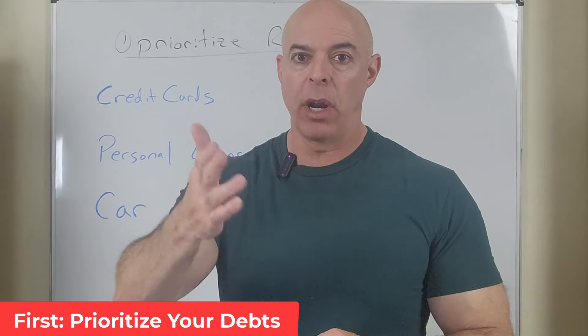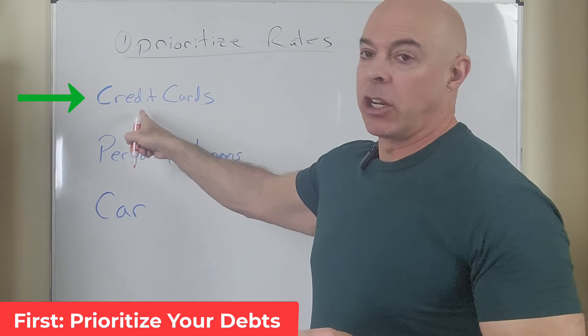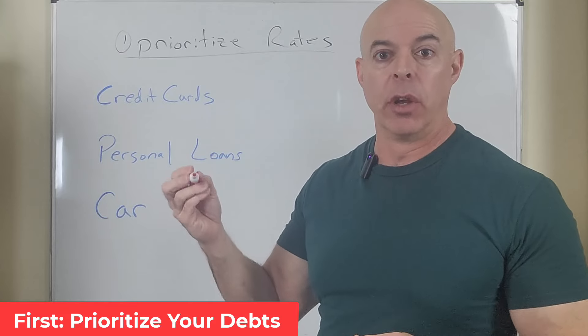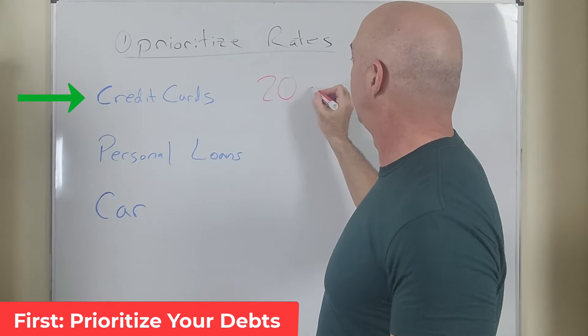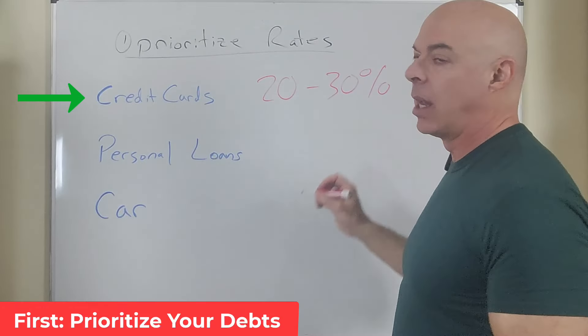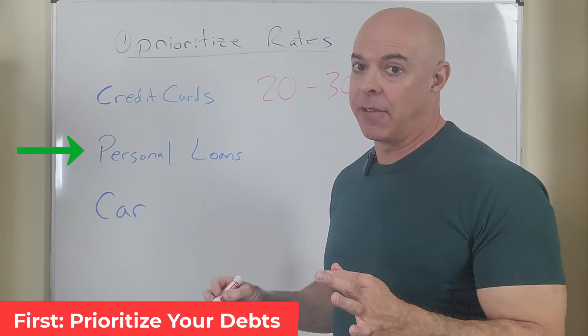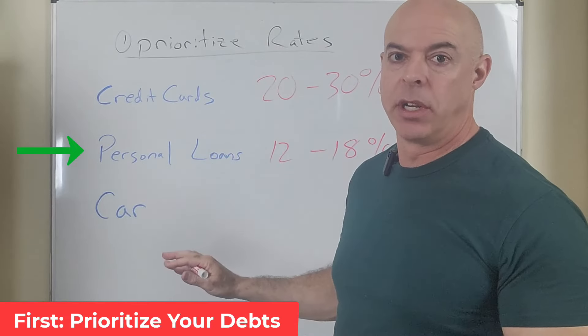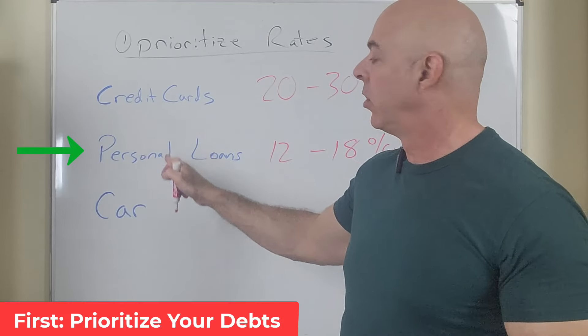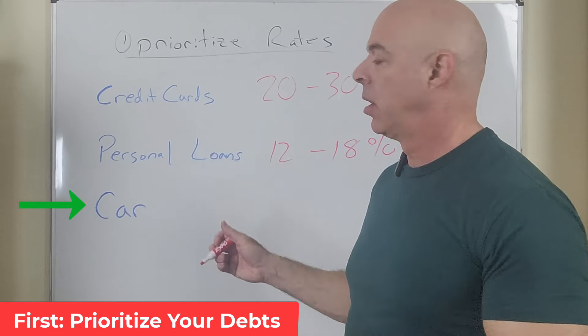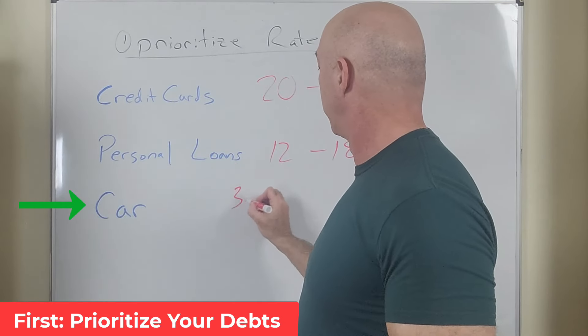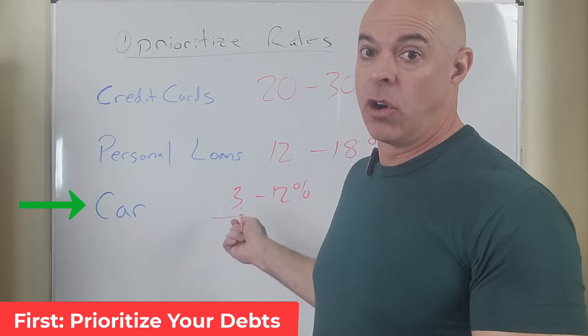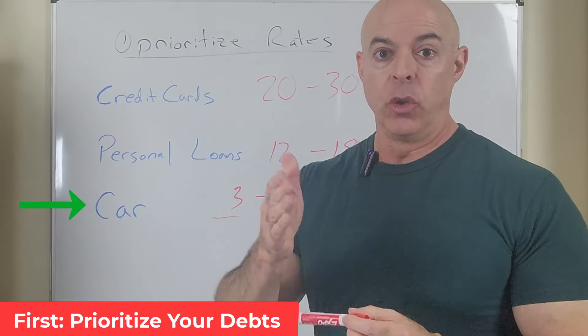So first thing you want to do is prioritize your debts. Credit cards, personal loans, car loans. You may or may not have some of these, and then you want to look at your student loans. So credit cards at this point in time could be anywhere from 20% to 30%, outrageous. Personal loans can vary greatly on a lot of factors, but let's just say it's going to be somewhere between 12% and 18%. These are all relative to one another. Typically credit cards are more than personal loans. It can depend a lot on your own financial situation as to what you get offered. And then car loans, let's just say anywhere from 3% to 12%.